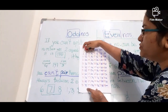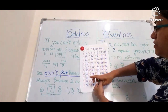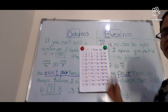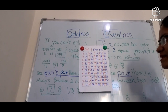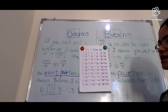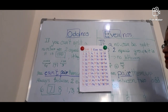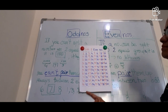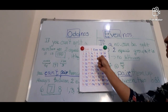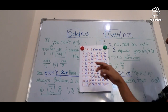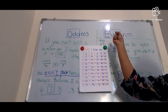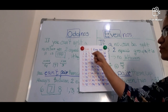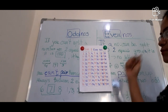Now I will show you a chart so that it is easy for you to find out which one is the odd number and which one is the even number. I have written numbers one to one hundred. In the case of odd numbers, every time the last digit should be one, three, five, seven, or nine.